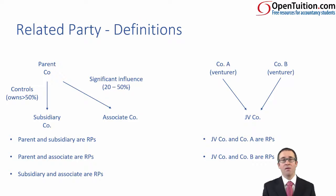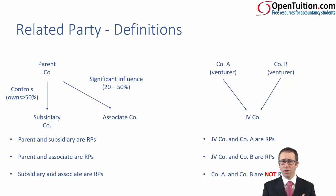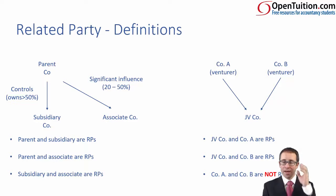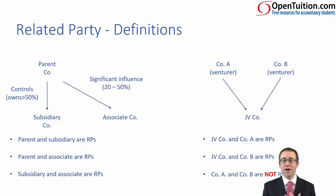JVCo and Company B are related parties. But be very careful — the two venturers, Company A and B, are not related parties. They don't have control over one or the other and have no influence over one or the other. The decisions that they make are totally independent. So if there were to be any transactions between them, that would not be a related party transaction. The venturers are not related parties.